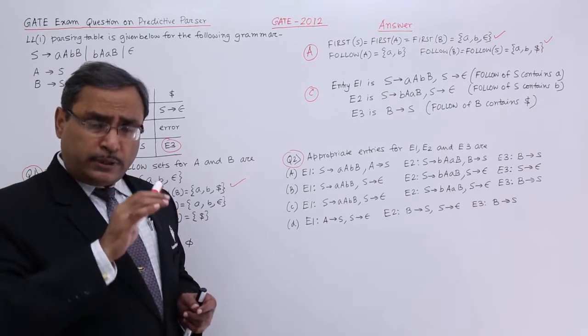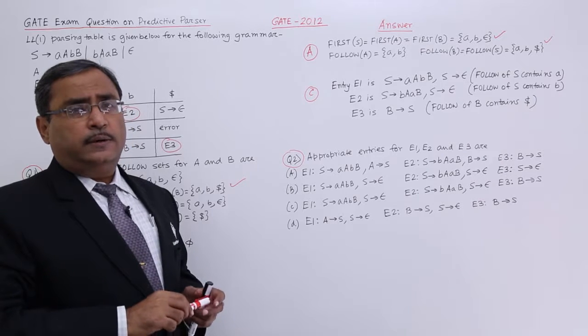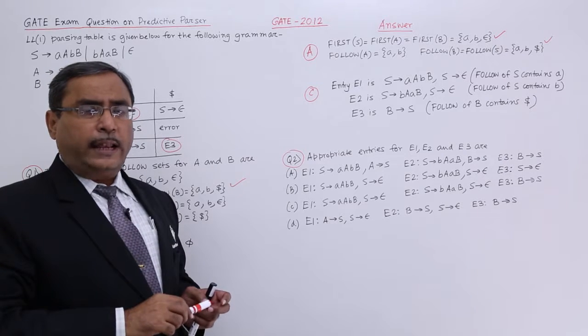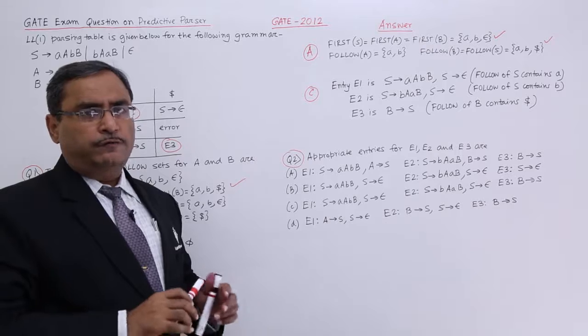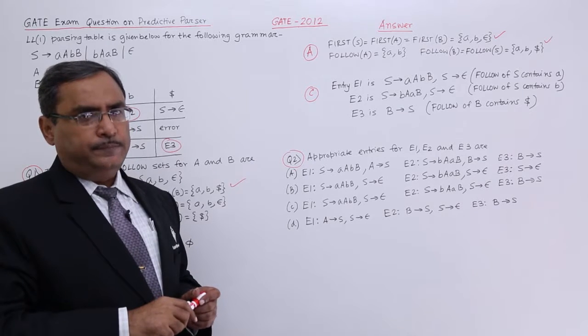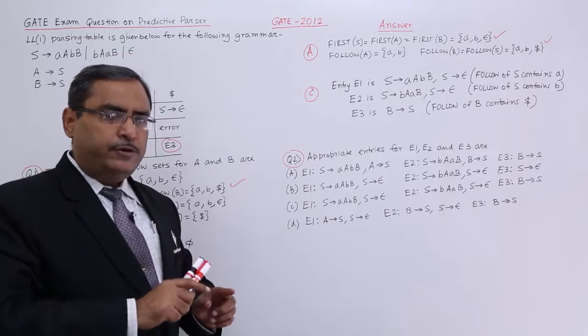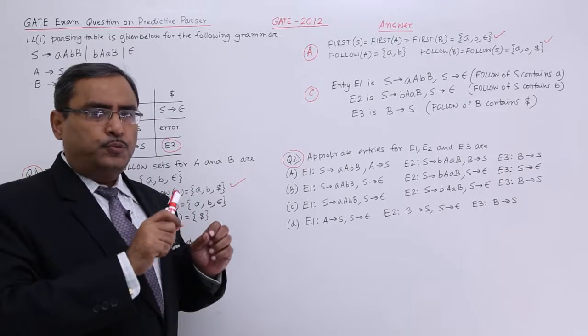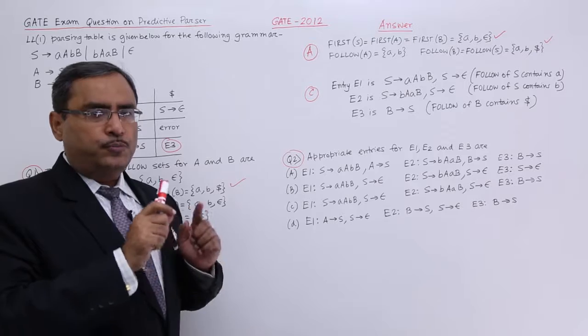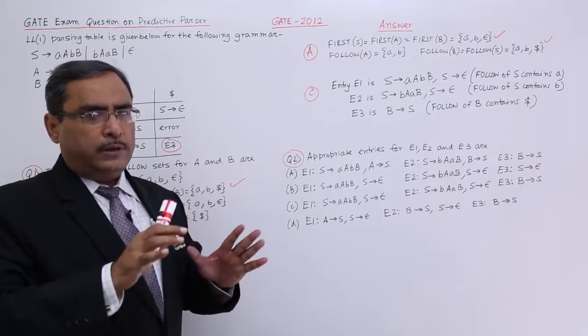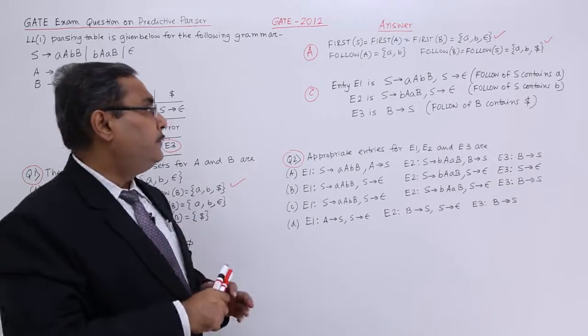In that case, we should have to go through that video where we have done the calculation or formation of predictive parsing table LL1 parsing table. Please watch that video. There we have mentioned each and every norm, how to put the production rules, how to put the epsilon and whatever.